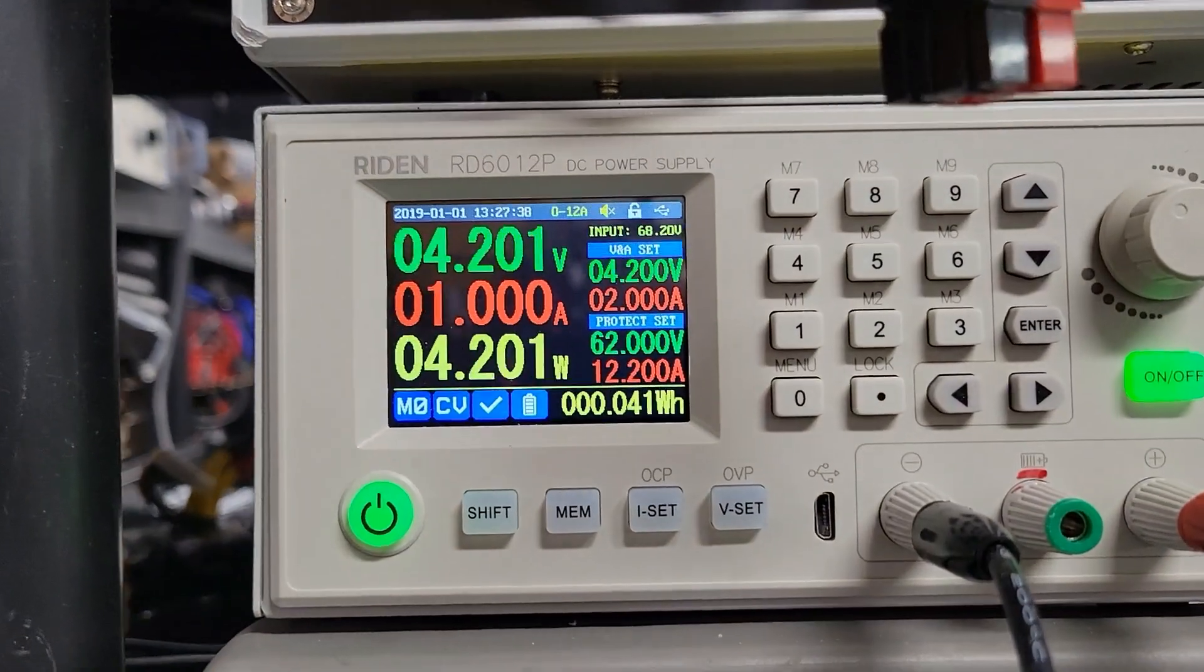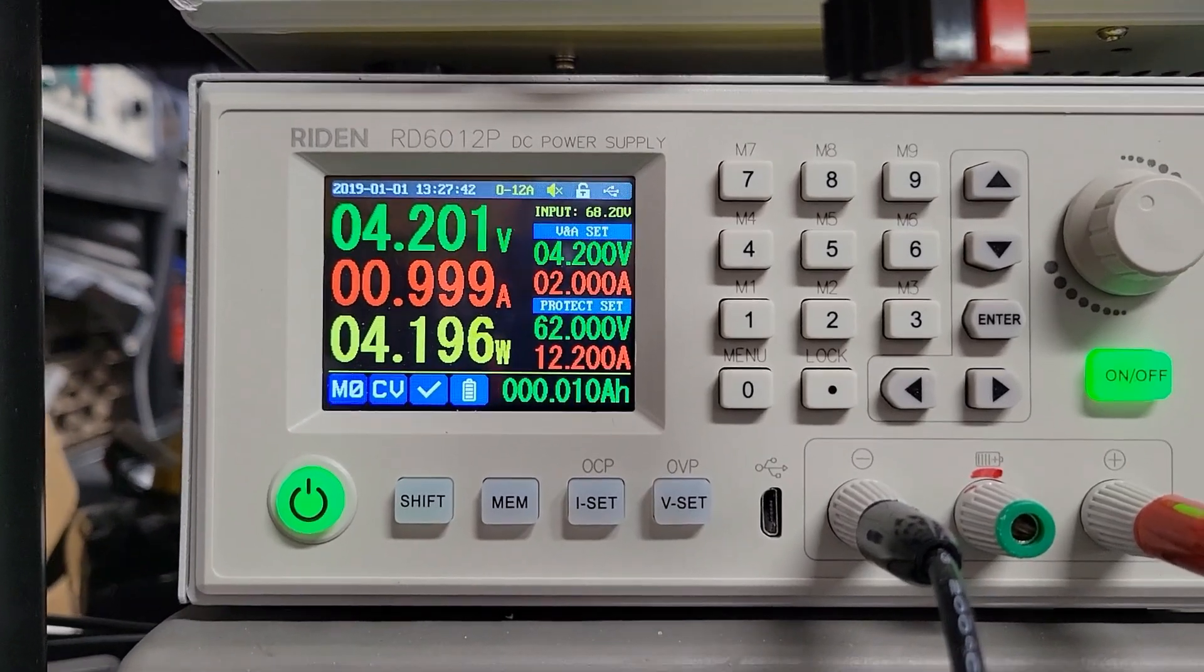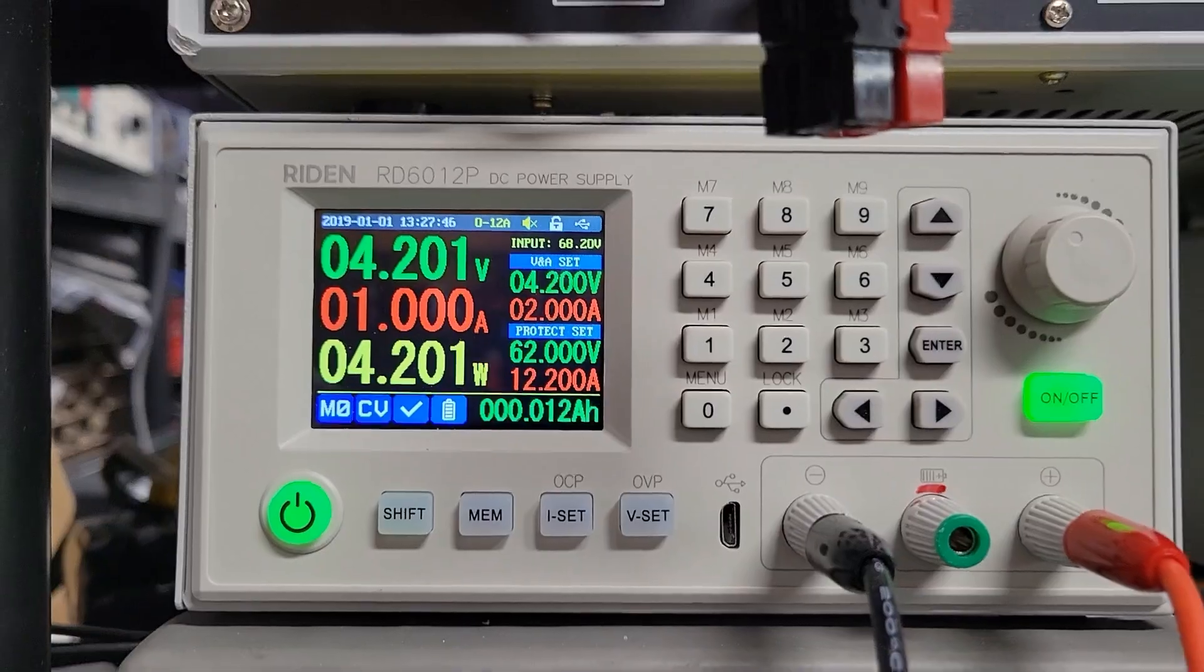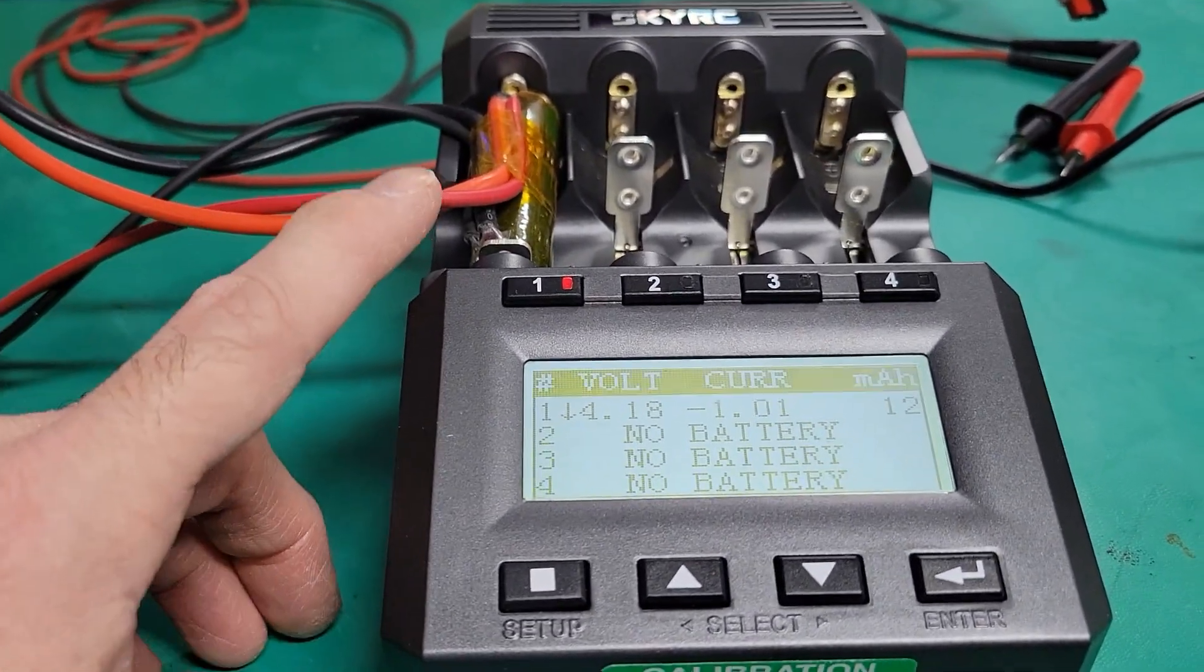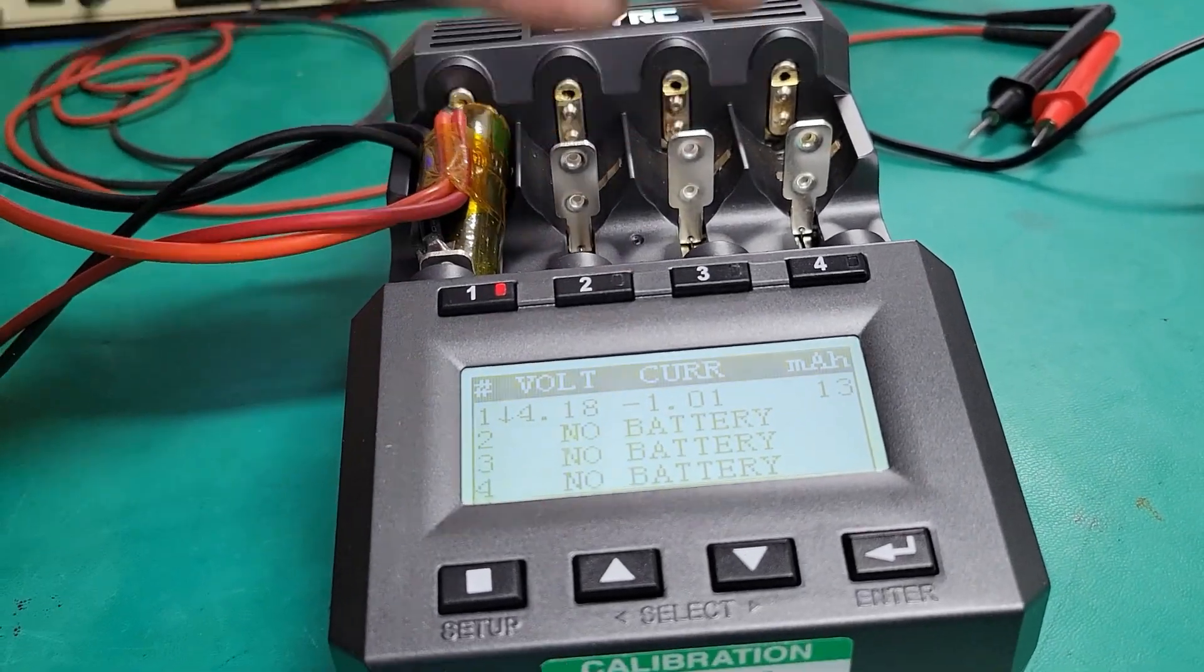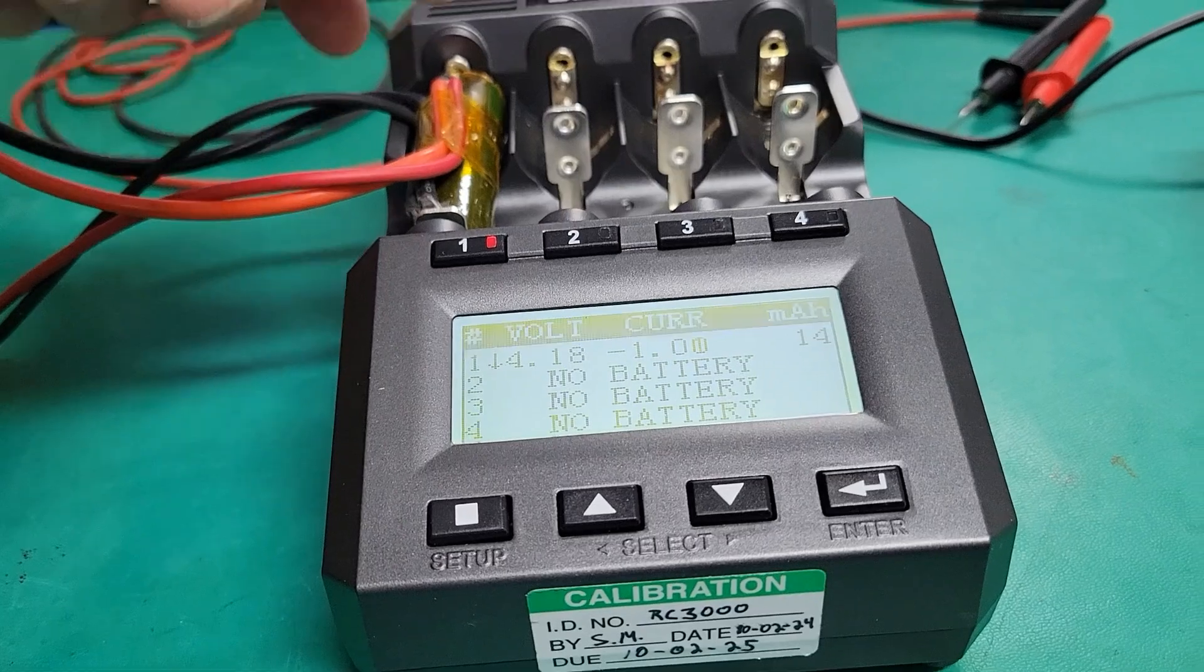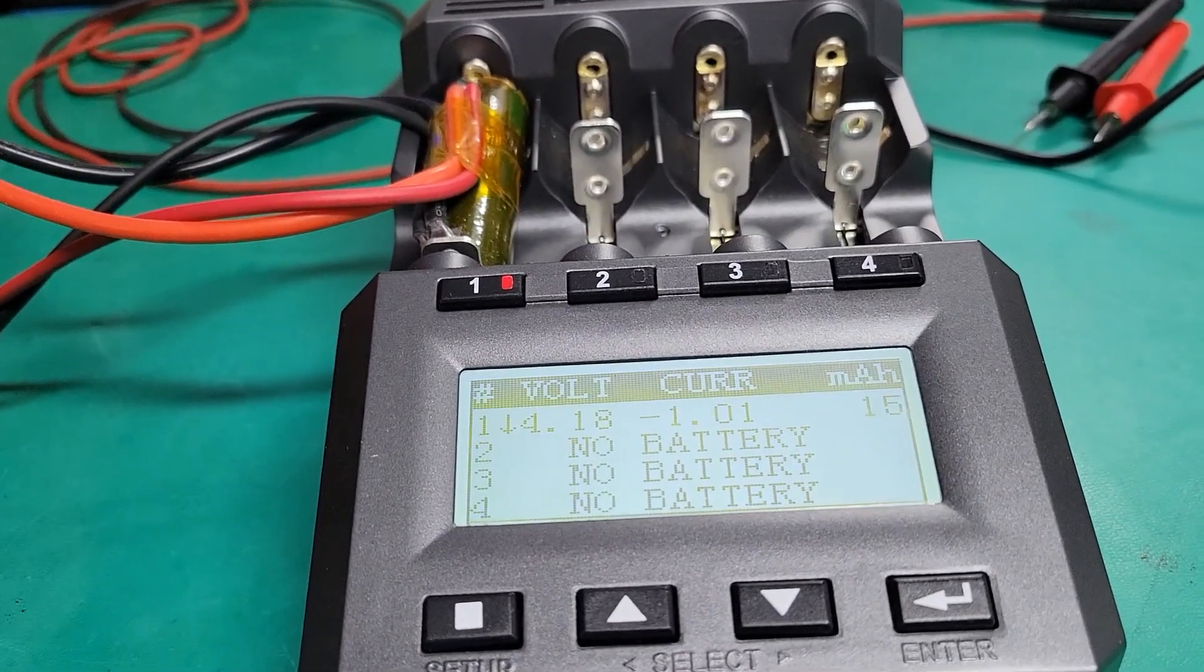And so this one is indicating minus negative 1.00 something. And on this one, it's about the same, plus or minus 1 millivolt. So this is about the good accuracy I can get once this one is calibrated. And doing so with the four channels, I'm sure that each channels are calibrated exactly the same. So whatever the cell port I chose, it will still read the same exactly.